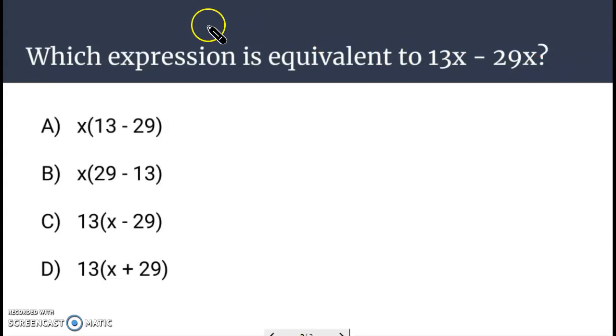A couple ways to look at this. We could take this expression and simplify it and 13x minus 29x is going to give us a negative 16x.